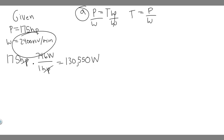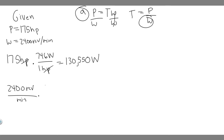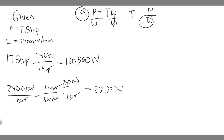Now let's convert the angular velocity. We need it in radians per second. So 2,400 revolutions per minute — one minute is the same as 60 seconds, which cancels the minutes, giving revolutions per second. Then one revolution is equal to 2π radians, so one revolution cancels. So it's 2,400 times 2π divided by 60, which gives you 251.327 radians per second.